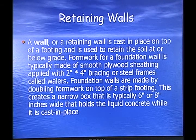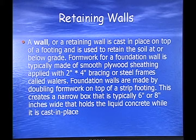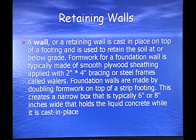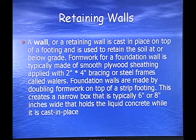Retaining walls. A wall or retaining wall is cast in place on top of the footing and is used to retain the soil at or below grade. Form work for the foundation wall is typically made of smooth plywood sheeting applied with two-inch by four-inch bracing or steel frames called whalers. Foundation walls are made by doubling form work on top of the strip footing, creating a narrow box that is typically six inches to eight inches wide that holds the liquid concrete while it is cast in place.